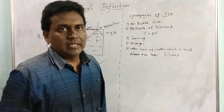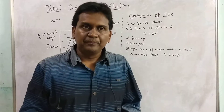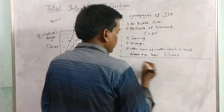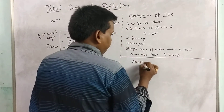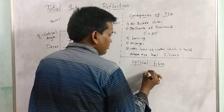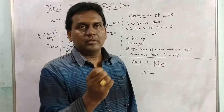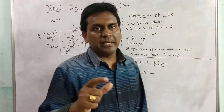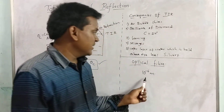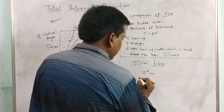The most important application based on the principle of total internal reflection is optical fibers. Optical fibers are very thin fibers made up of glass or plastic, having a radius of 10⁻⁶ meters, that is, in micrometers. Such thin fibers together make a light fiber cable.